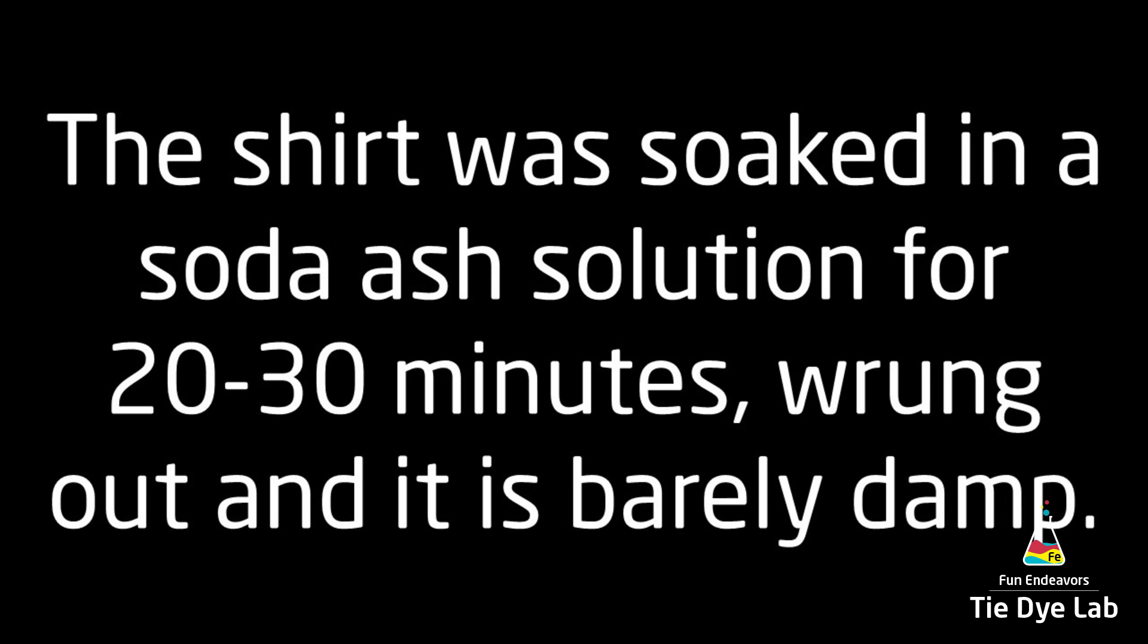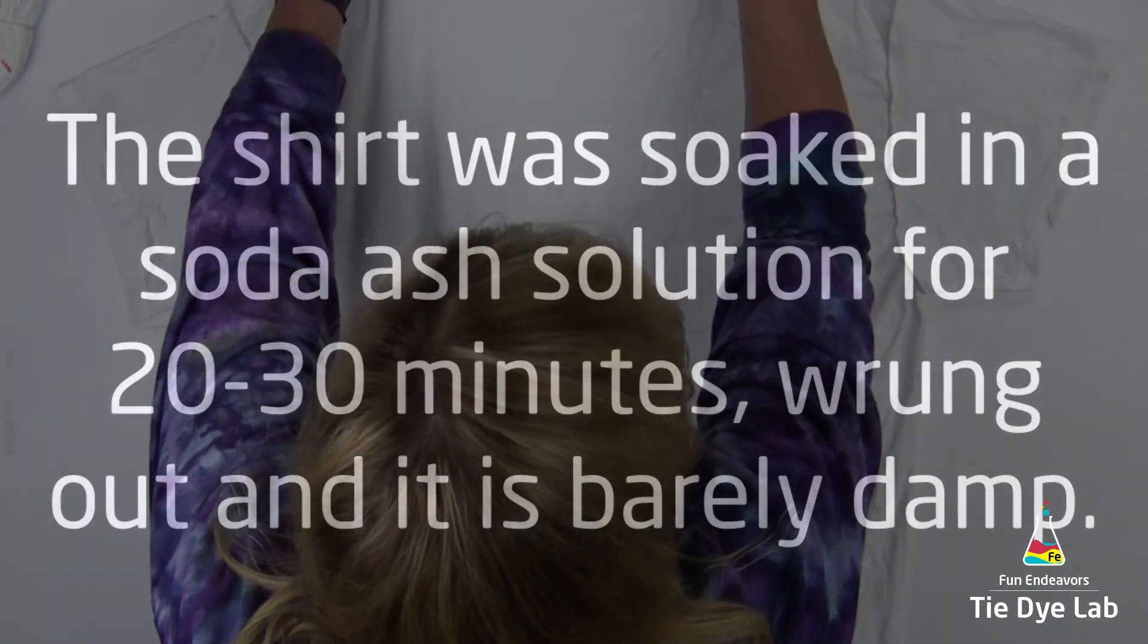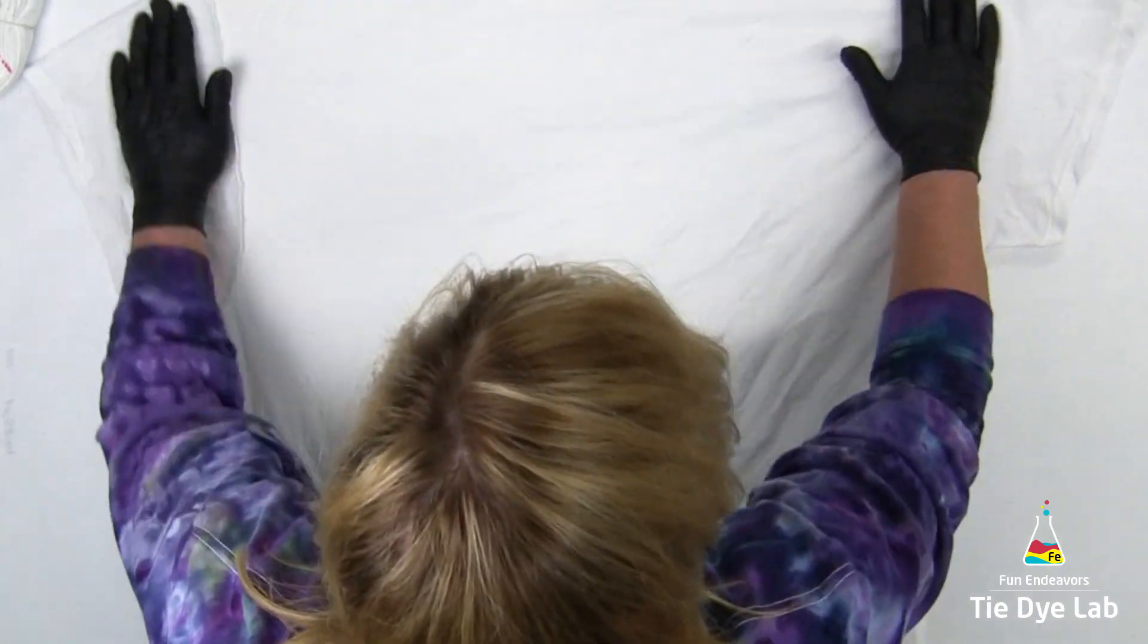I've washed and dried my shirt, soaked it in a soda ash solution for at least 20 to 30 minutes. I spun it out of my panda spin dryer and so it's just barely damp. I also have it turned inside out.